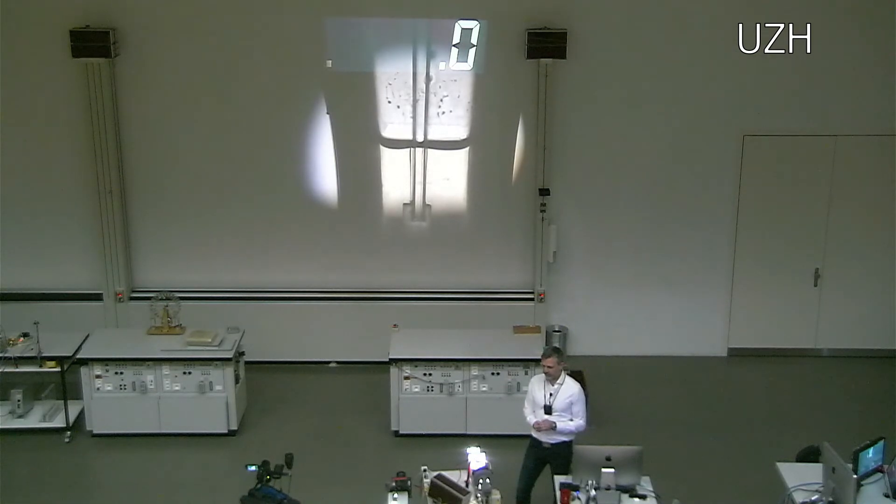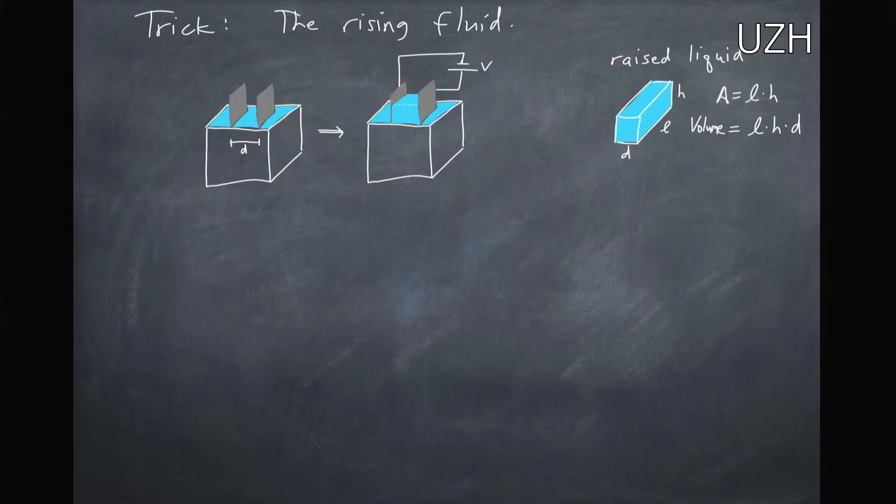And so first of all let's have a look at the equations. The first thing we're going to do is draw this sketch out here. I have these two parallel plates a distance d apart, and when I put a voltage across these plates we will raise some amount of liquid, some volume of liquid here that we're going to rise up.